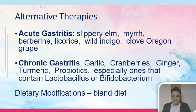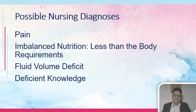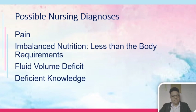For alternative therapies, there are herbs that can be used by patients. Lactobacilli is usually used for infection in the stomach — it is considered good bacteria. Dietary modifications include a bland diet. Possible nursing diagnoses include pain and imbalanced nutrition less than body requirements, related to the failure of the stomach to produce adequate acid, removal of the stomach, or the lack of intrinsic factor leading to failure of digestion.